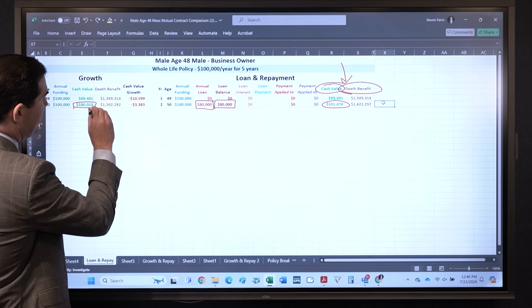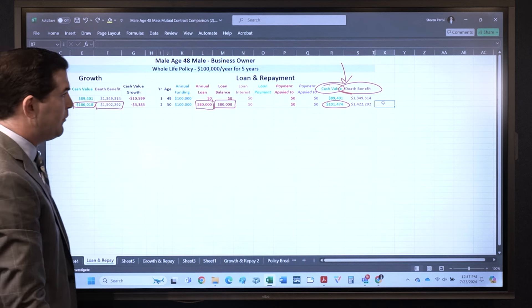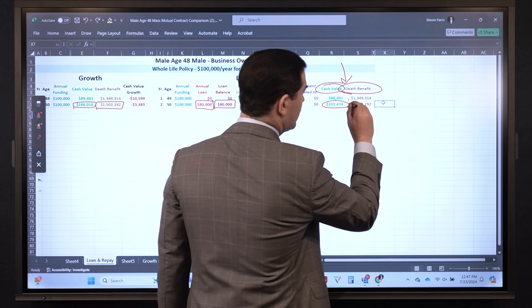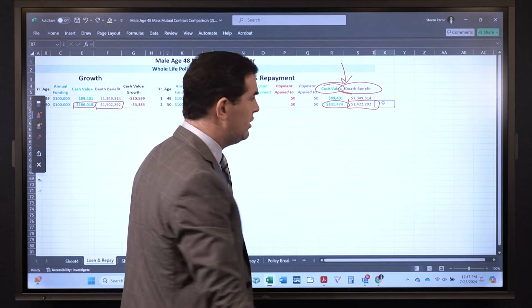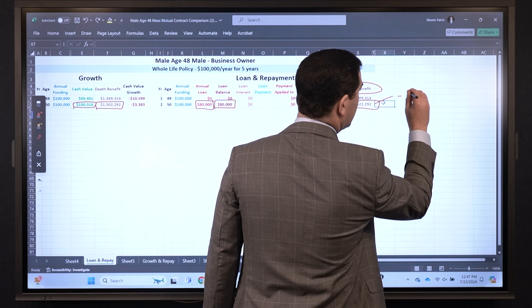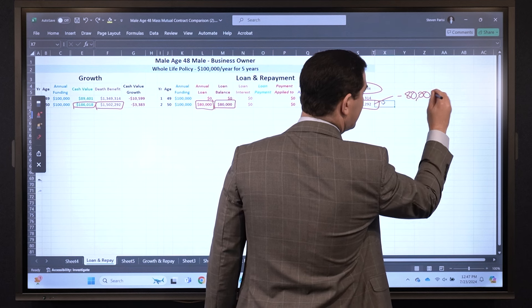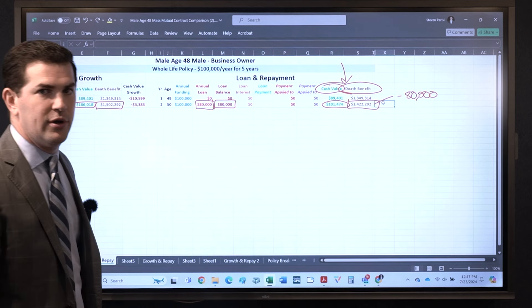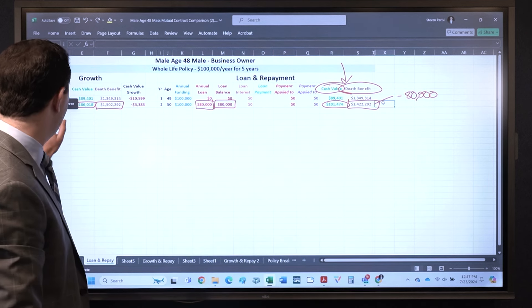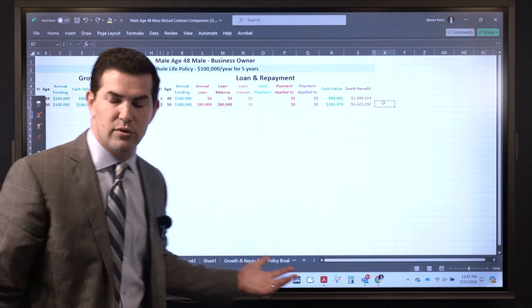What happened to your death benefit? Pre-loan was $1.5 million, post-loan $1.42 million. It dropped by exactly the amount I borrowed. You'll see that happen every time with a life insurance policy regardless of the company.